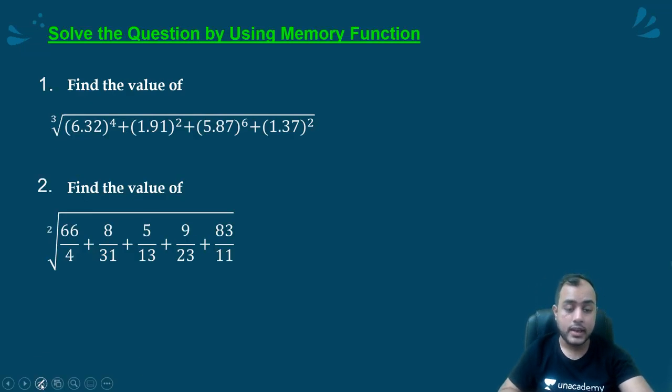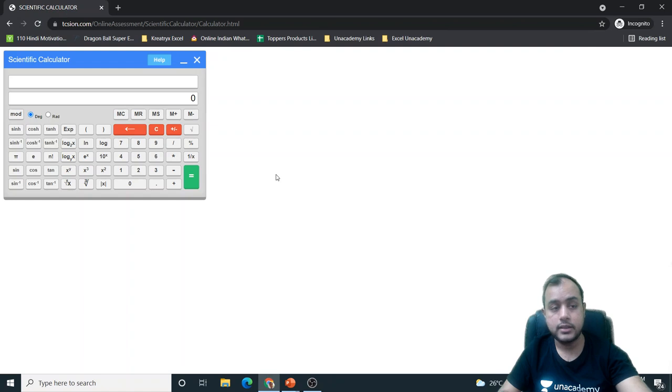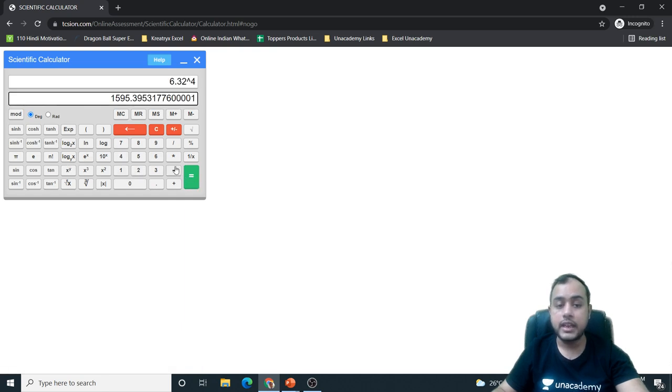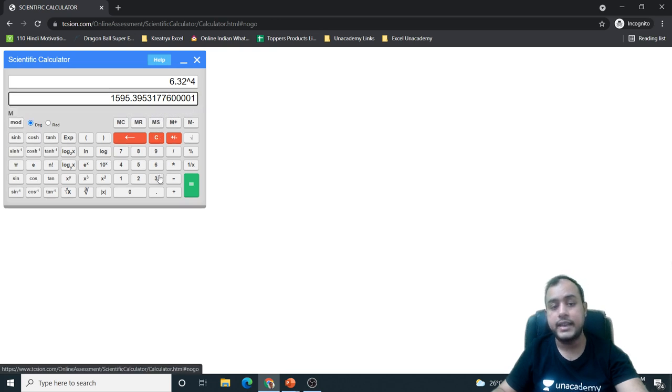Let us see how to use it. Suppose I want to calculate this value. This value is quite long. Let us see how I will do it. First of all, I will clear the memory. MC, 6.32. I will raise it to the power 4. Whatever is the data, I will press the MS key. It will store the data in the memory.